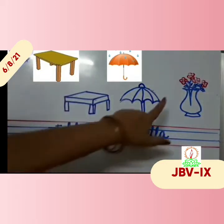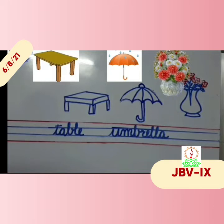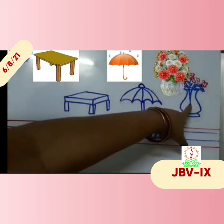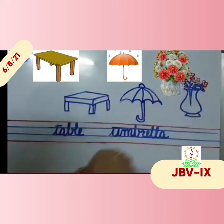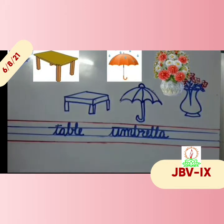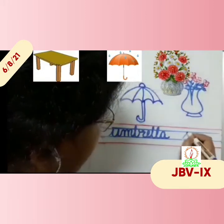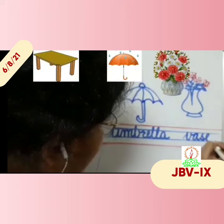Umbrella. Now what is this, children? This is a vase. Now in the vase I have drawn a flower — different types of flowers. In the flower vase, you can keep flowers to decorate your house. What is the spelling of vase? V-A-S-E.